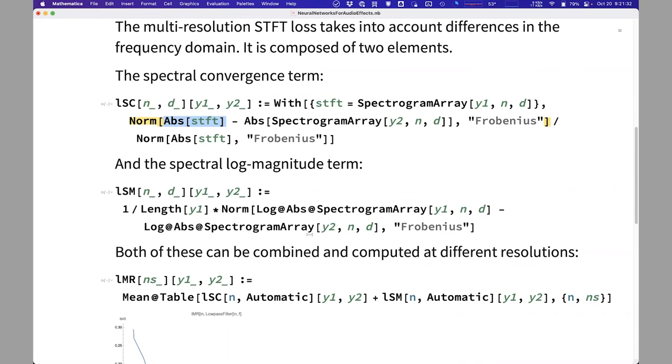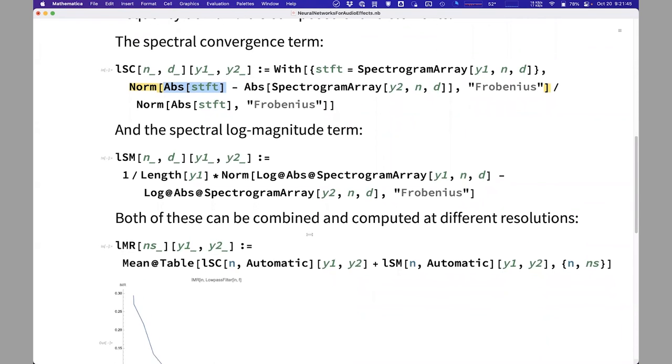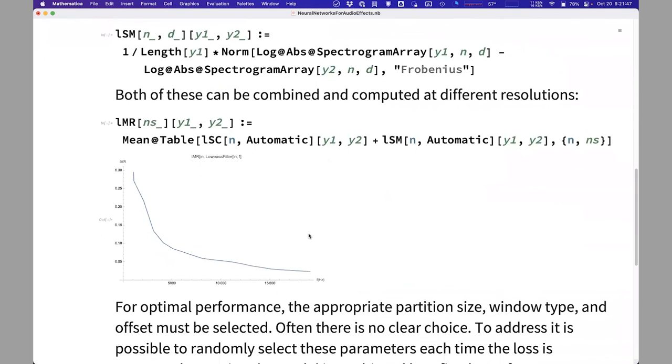So what we do here is look at this kind of combined time frequency representation and compare those, and we can compute that at different resolutions to make sure that we are not tuning the network to only satisfy one specific kind of short-time Fourier operation. So this is kind of the more perceptual loss that is used in training.